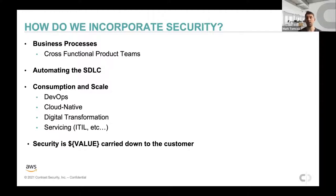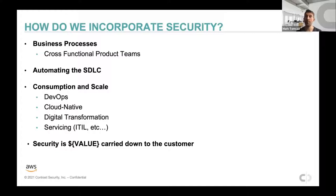We're going to be talking about automating these software life cycles. There are frameworks companies follow — DevOps, ITIL — that take all this knowledge and make it consumable for the enterprise. You want to make sure that cross-functional product teams determine alignment and how software gets out the door is enhanced through automation. The automation does not necessarily drive the business processes — it piggybacks off the business processes. And last but not least, security is value carried down to the customer.